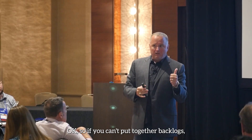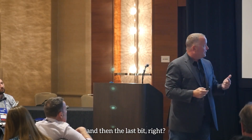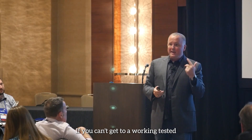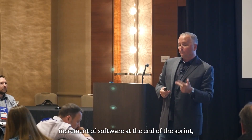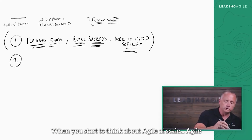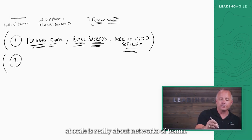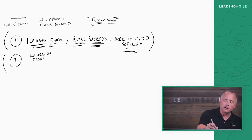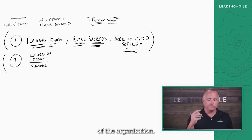So if you can't put together backlogs, if you can't form complete cross-functional teams, and if you can't get to a working-tested increment of software at the end of the sprint, then Scrum's not going to work. When you start to think about Agile at scale, Agile at scale is really about networks of teams — what I often refer to as the structure of the organization.